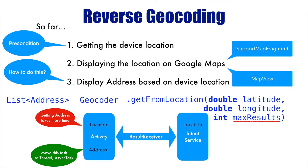A lot of communication happens between the activity and the Intent Service, and for that we will use a Result Receiver, which is of Parcelable type. There are quite a few things you should know before attempting this — how to work with Intent Service, Parcelable, communication between activity and Intent Service, and the concept of bound services. If you are new to these, I suggest going through the relevant tutorials on CoTutor first.